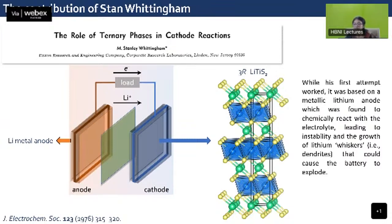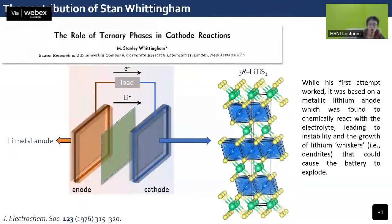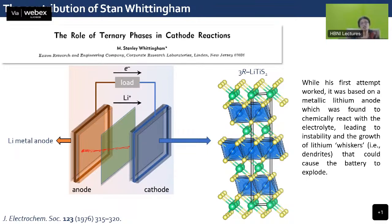The problem with Whittingham's work was that it used a metallic lithium anode, which reacted with the electrolyte, leading to instability and growth of lithium whiskers or dendrites. If the whisker grows, it perforates the separator, meets the cathode, and causes a short circuit. A hotspot develops and lithium starts depositing continuously at that point, ultimately causing a short circuit. That's why this work didn't have a lot of cyclability.